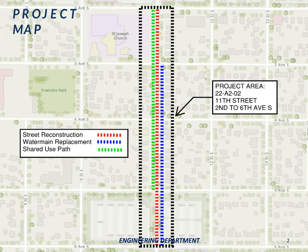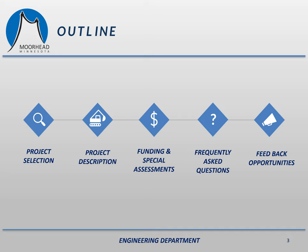This is a vicinity map of the project area and shows the rough limits of construction. The project area includes 11th Street South from 2nd Avenue to 6th Avenue South. In this presentation, we'll go over a brief explanation of how the city selects its project areas, how we decide which streets to do, and the different types of work we can do. I'll also explain the type of work we are proposing to do in your neighborhood. We'll also go over funding and special assessments as well as some frequently asked questions. We'd also like this to be an opportunity for residents to provide some feedback, and I'll go over that later in the presentation.